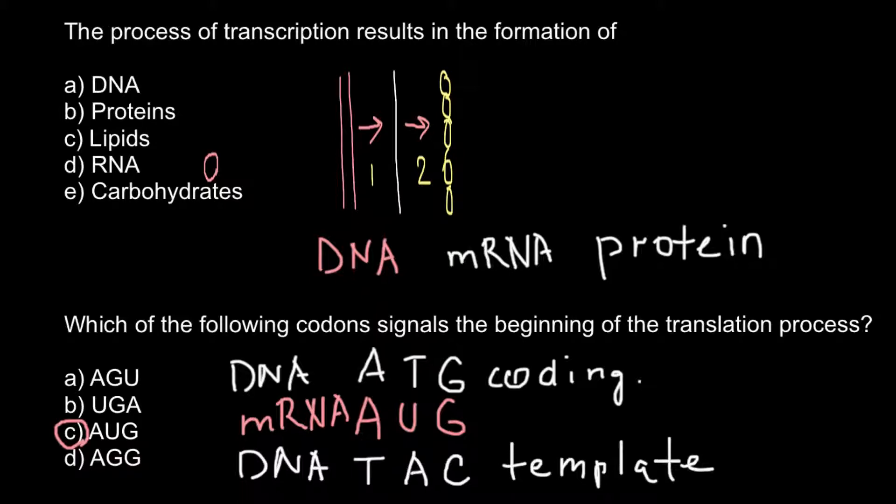If we have the template strand, then we have to build complementary message RNA strand using pairing: A pairs with T or thymine, and G going in pairs with C cytosine.